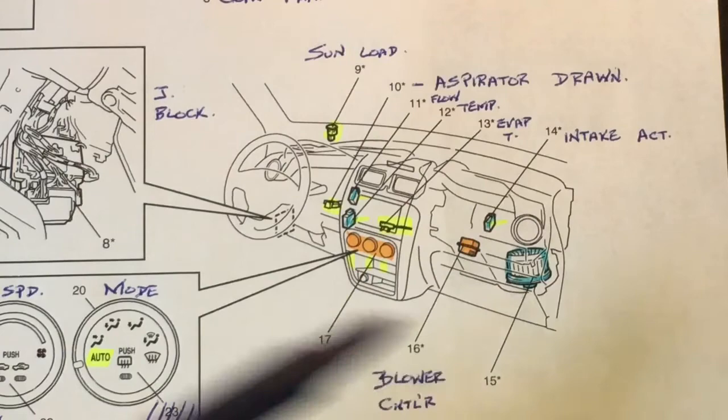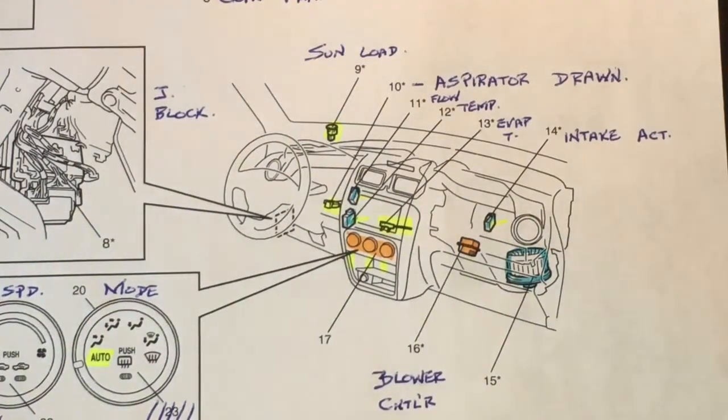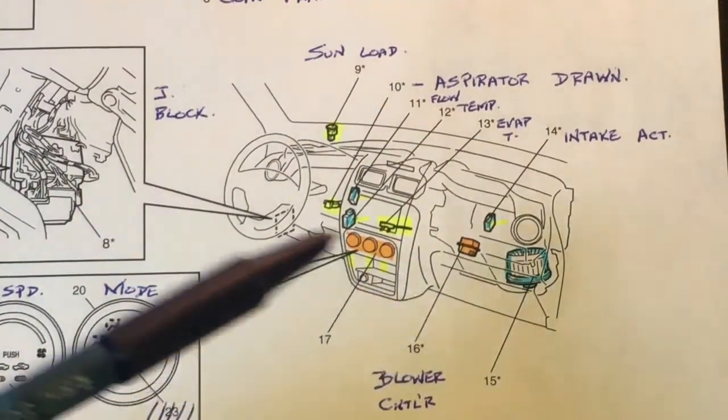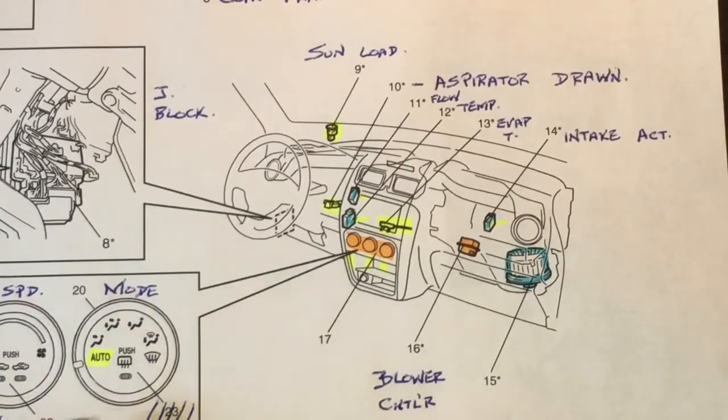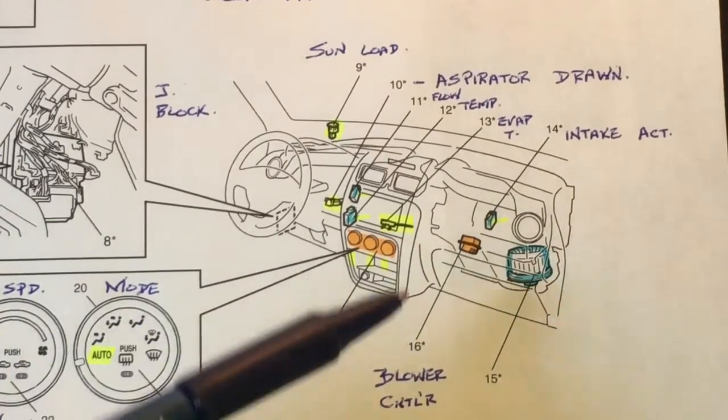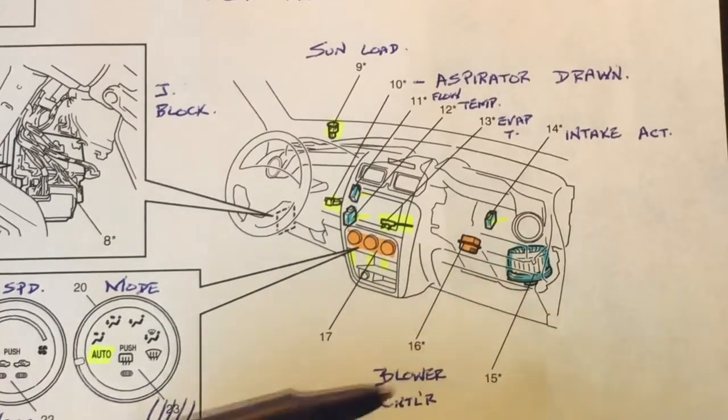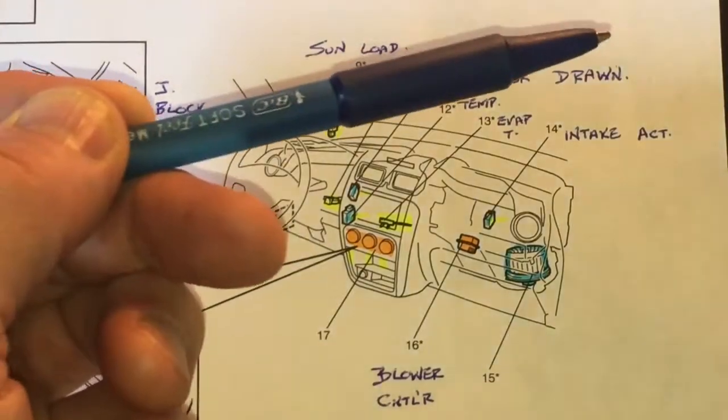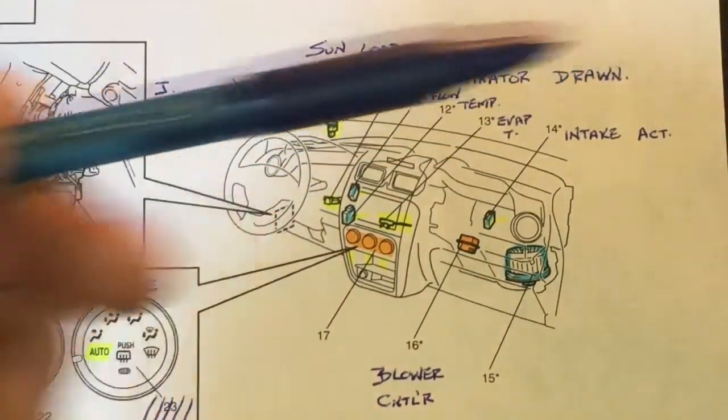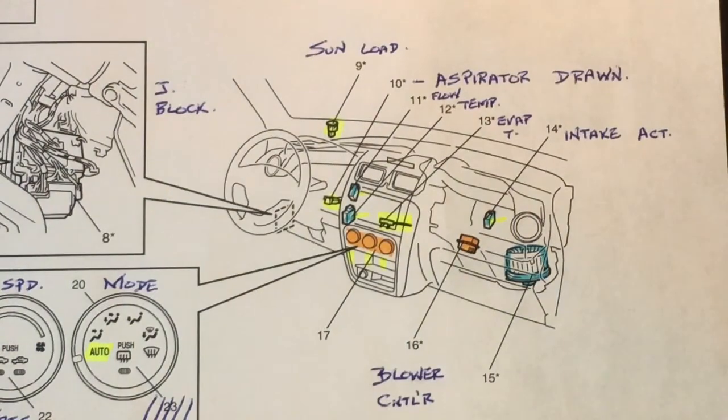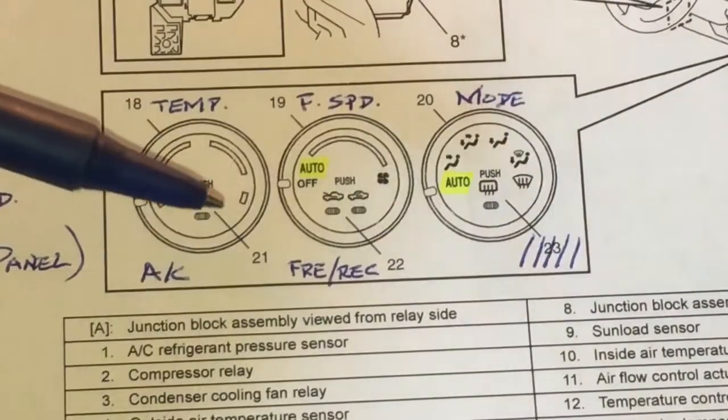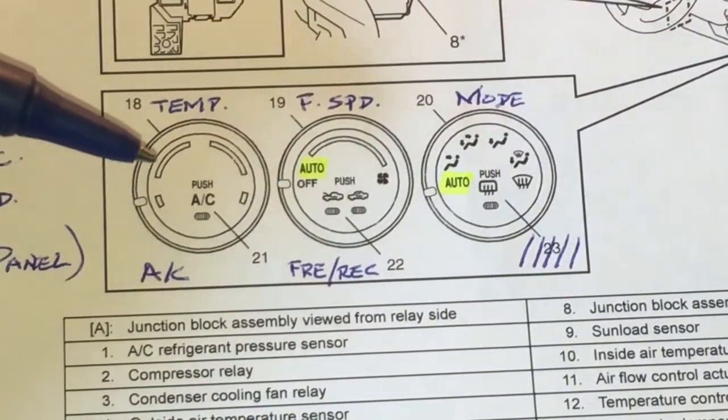It can be either automatically or manually controlled in the climate control system in the SX4, and it's done through the selector of course on the panel. We'll get to that in just a second. But it's also controlled via a blower controller. Another video shows you how that works - it's actually on my Vitara, but it's basically the same system if you want to see that in more detail.